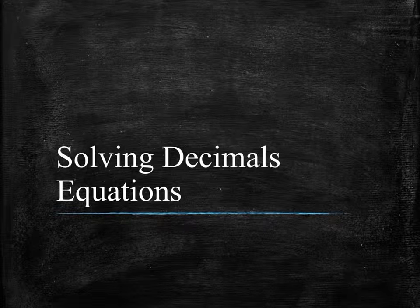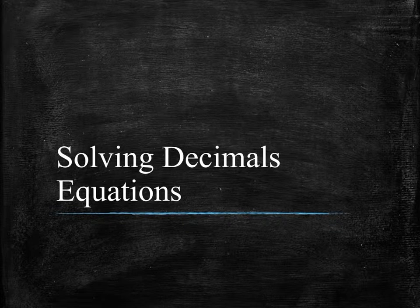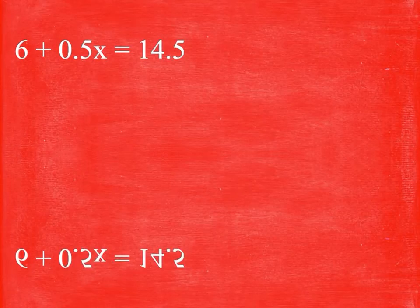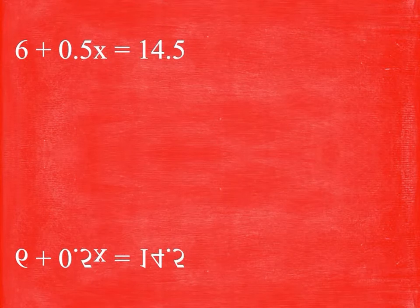Let's start with keeping the decimals. Here you can see we've done problems like this before. Now we just have a decimal. There's nothing really new here, it just looks more confusing because it has a decimal. So we're going to start off by subtracting 6 on both sides.